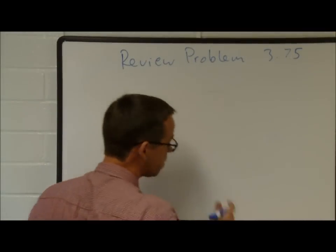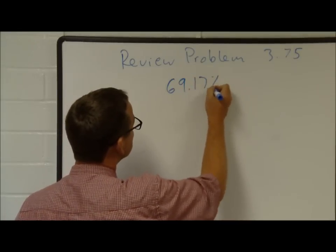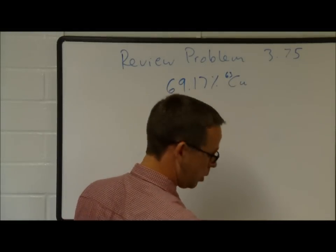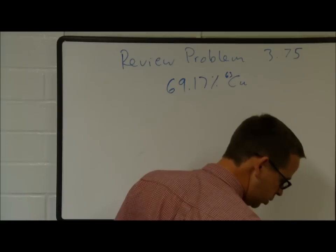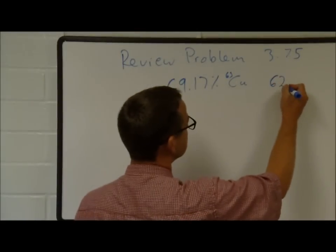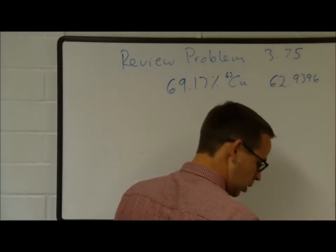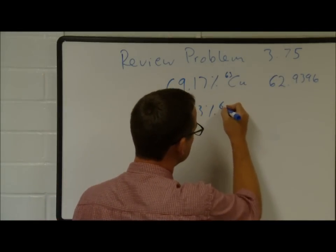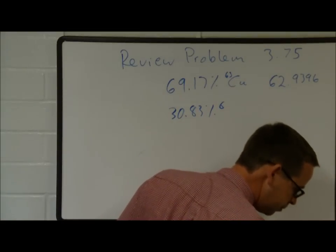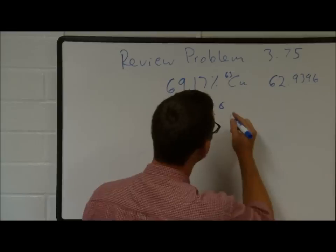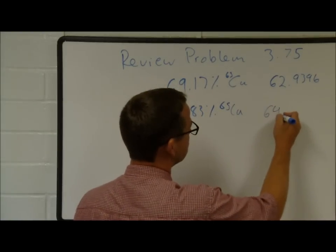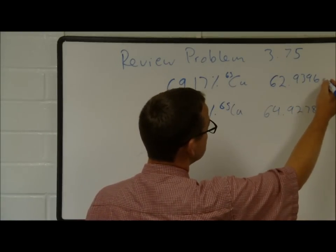Copper isotope problem. 69.17% copper-63, which has an atomic mass of 62.9396 grams per mole, and 30.83% copper-65, with a mass of 64.9278 grams per mole. Use these data to calculate the average atomic mass of copper.